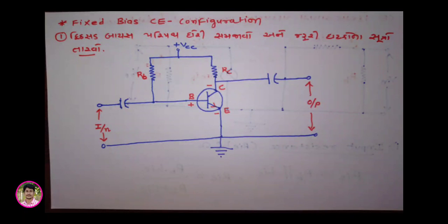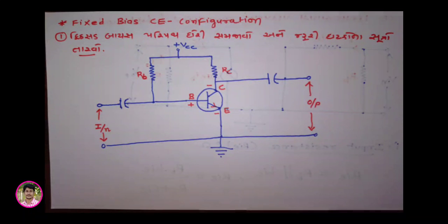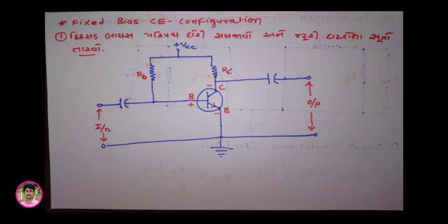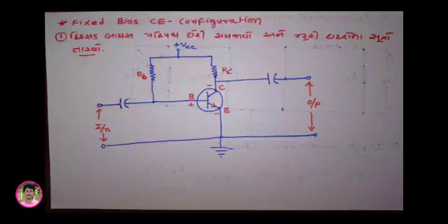After seeing all these conditions, we have another theory: Fixed Bias Common Emitter Configuration. In Gujarati, we call it the Fixed Bias circuit — we need to understand the circuit diagram and derive the formulas for the necessary components. In SYBSC Physics, Semester 3, Unit 2 (Paper 302), you have studied transistor stabilizing and biasing. So here we will look at the Fixed Bias circuit.